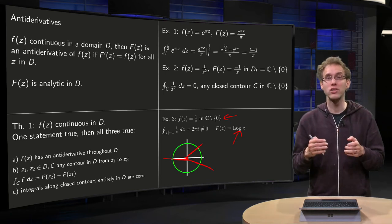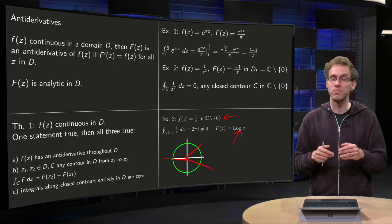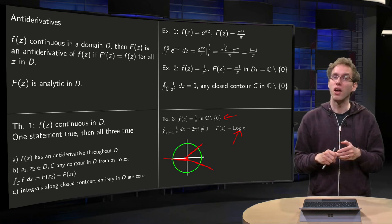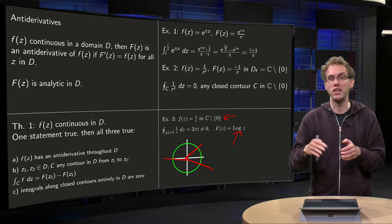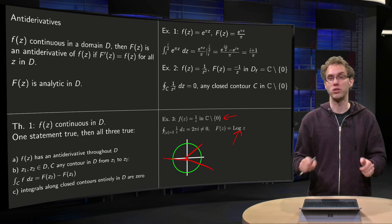So yes, this theorem is pretty nice. If you can find antiderivatives, you can compute integral along curves, integral along closed curves are zero. But you still have to be a bit careful in the 1 over z case because a log z arises. So there you have to put your branch cut somewhere.